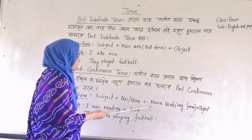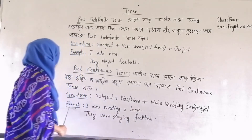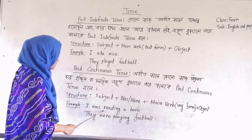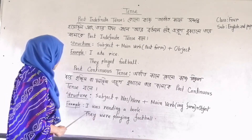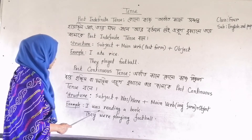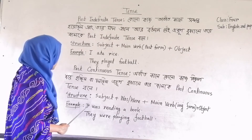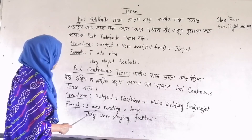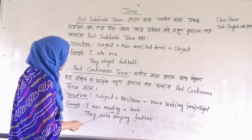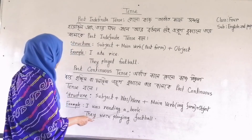For past continuous tense, we write the subject, then 'was' or 'were' according to person and number, then the main verb in its -ing form, then the object. For example: 'I was reading a book.' Here 'I' is the subject; we use 'was' because this is first person singular number. 'Reading' is the -ing form of the main verb, and 'a book' is the object.